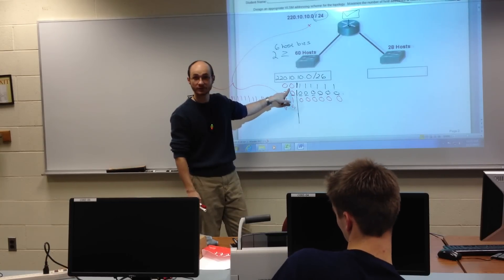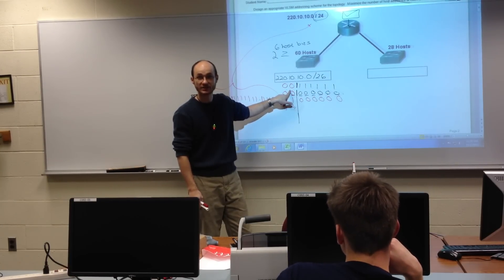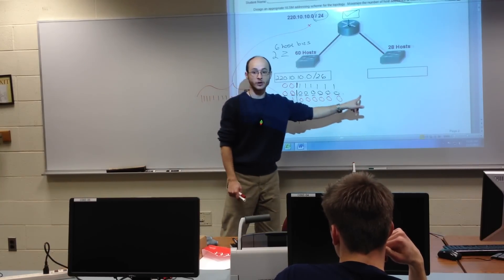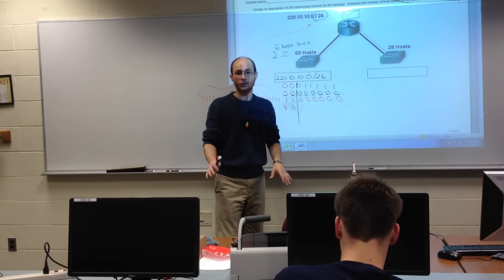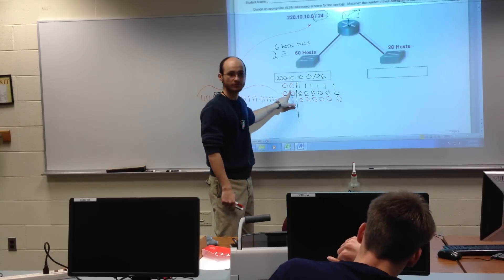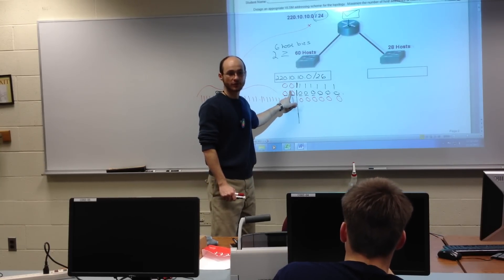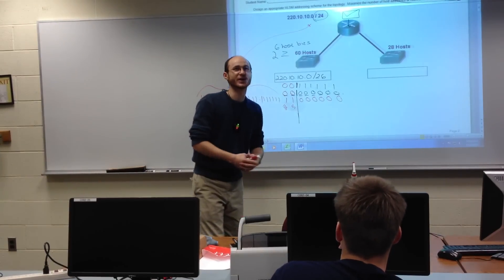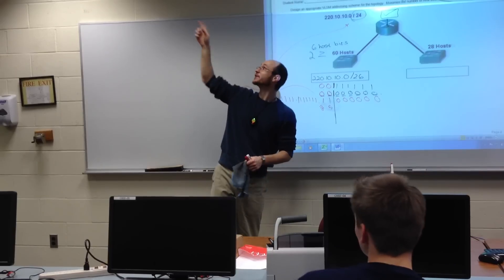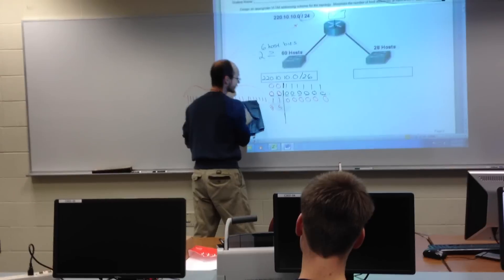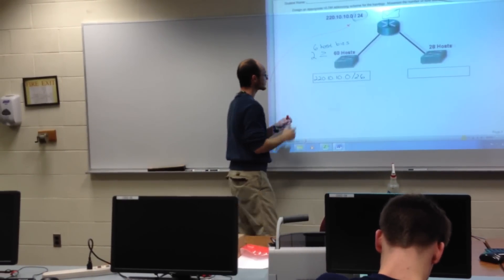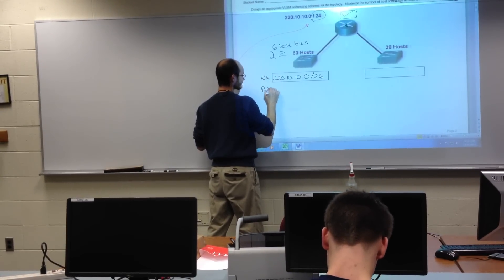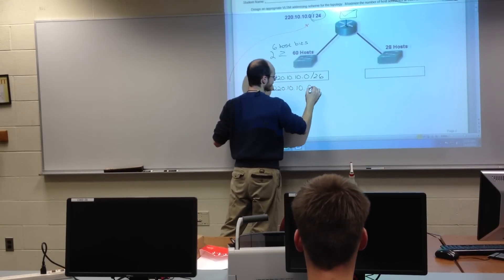It rolls to a 1 right across the line — the next network address. How do I know it's a network address? Because I have a 1 here, then all zeros afterward. What's the number right before 64? 63. So when you guys see all ones here, just go to the next column and minus 1 from it. So this broadcast address is going to be 220.10.10.63.